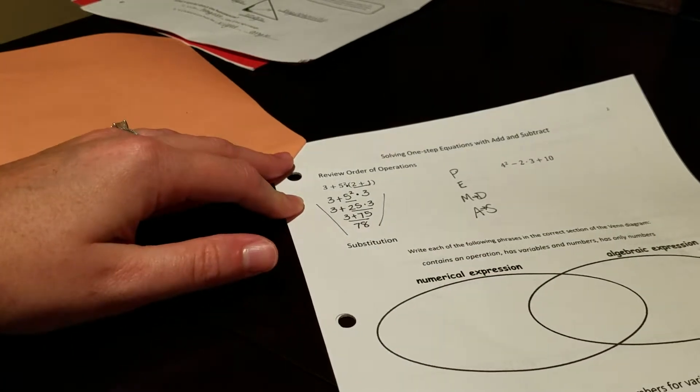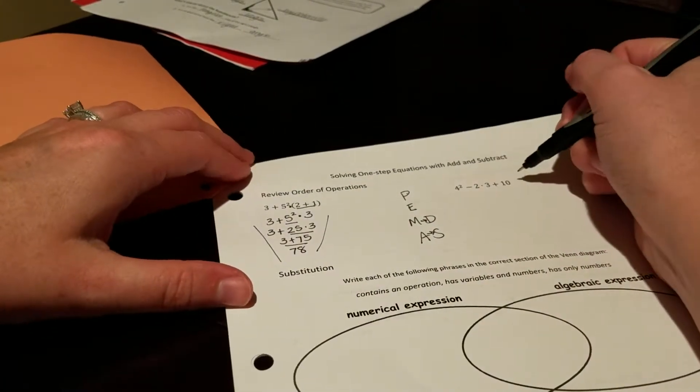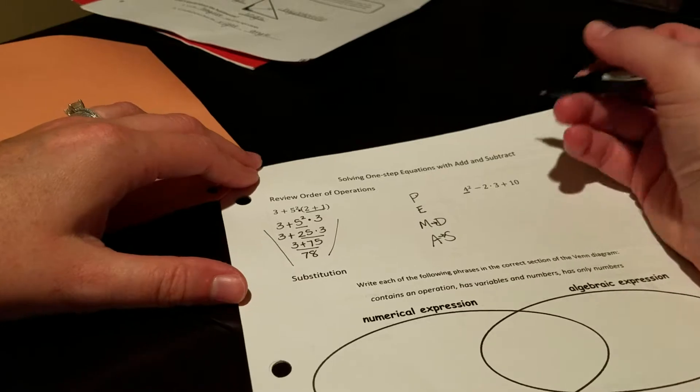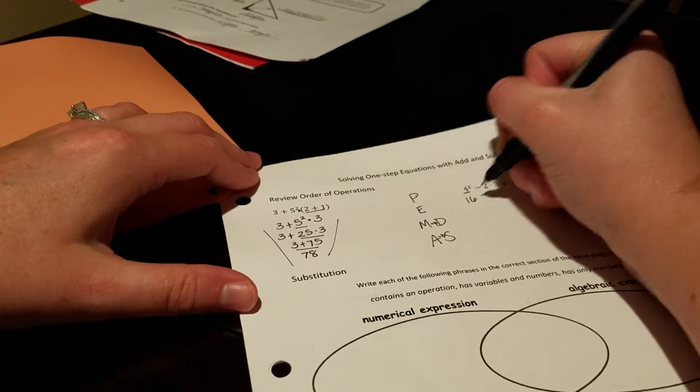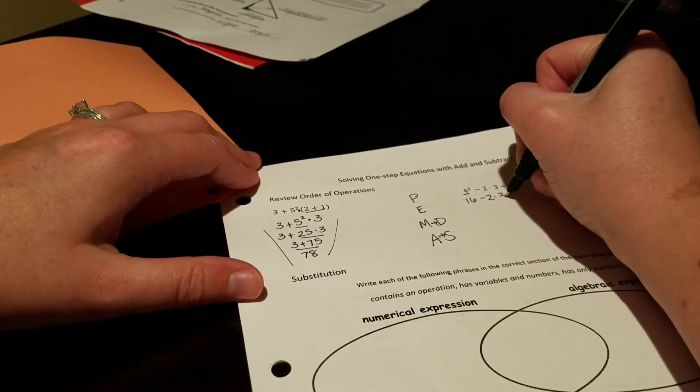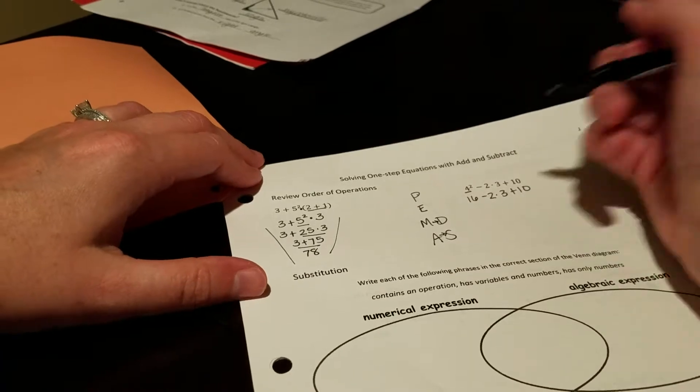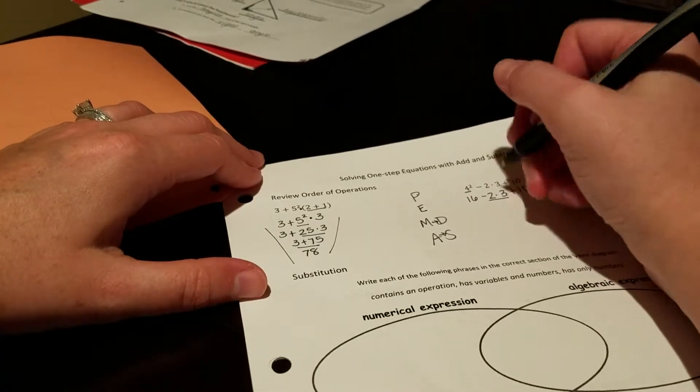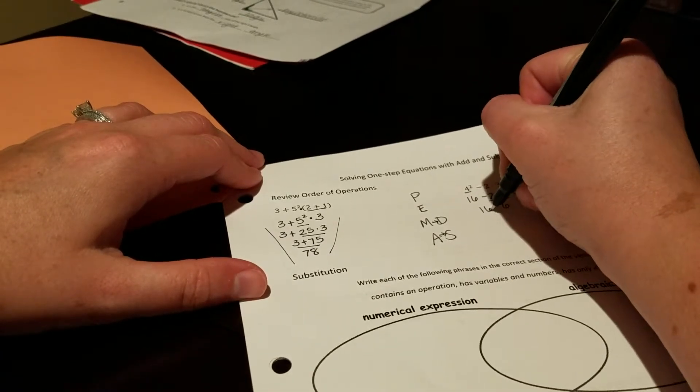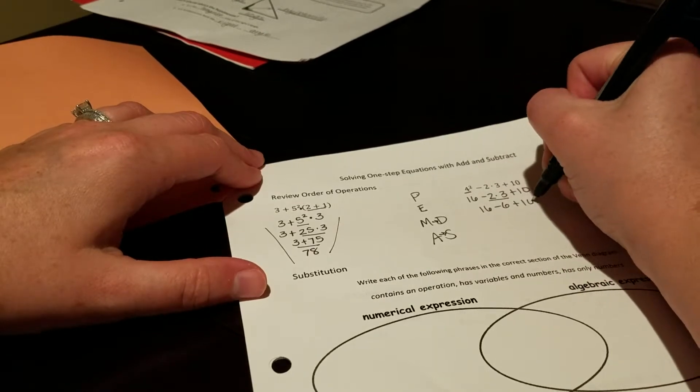Notice I'm trying to make that pizza slice here. Over here, no parentheses, but we do have exponents. 4 squared is 4 times 4, minus 2 times 3 plus 10. Multiply and divide, we do have multiplication. So 16 minus 6 plus 10.